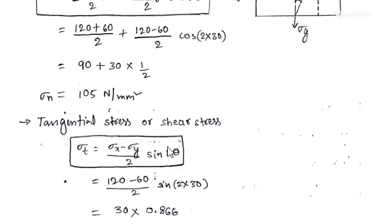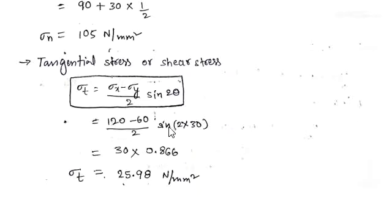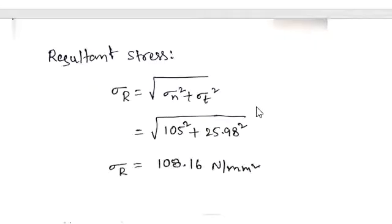For tangential stress, the formula is: σt = (σx − σy)/2 × sin 2θ. Here σx − σy = 60, and sin 2×30° = sin 60° = 0.866. Simplifying, we get the tangential stress σt = 25.98 N/mm².